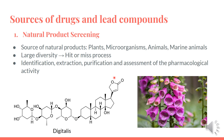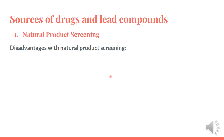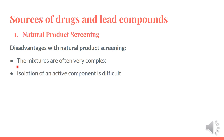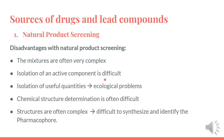What are the sources of drugs and lead compounds? Natural sources are still important sources of lead compounds and new drugs. In the past, this has led to the discovery of many important therapeutic agents — for example, the antimalarial quinine from cinchona bark and the cardiac stimulant digitalis from a plant called foxgloves. There is a large diversity of natural products, so it is rather a hit-or-miss process. Once screening identifies a material containing an active compound, the problem becomes one of extraction, purification, and assessment of the pharmacological activity. The disadvantages with natural product screening include: the mixtures are often very complex; isolation of an active component is difficult; and isolation of useful quantities has ecological problems. Chemical structure determination is often difficult, and structures are often complex and very difficult to synthesize and identify the pharmacophore.